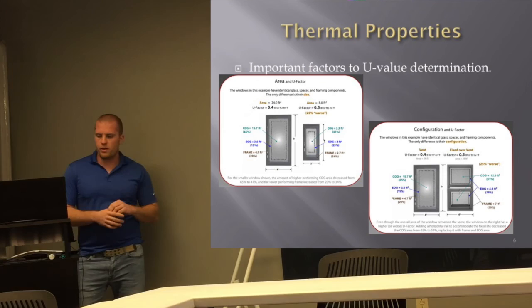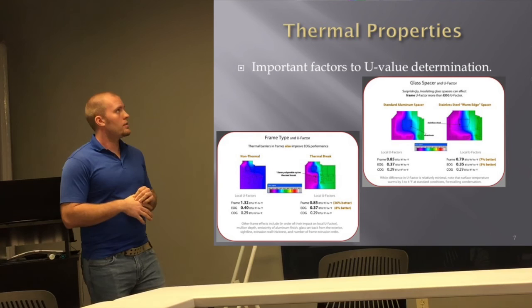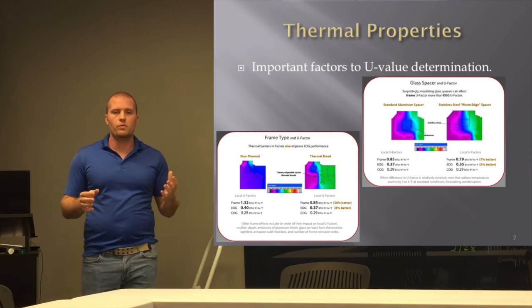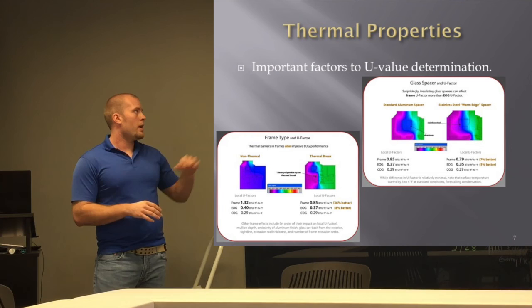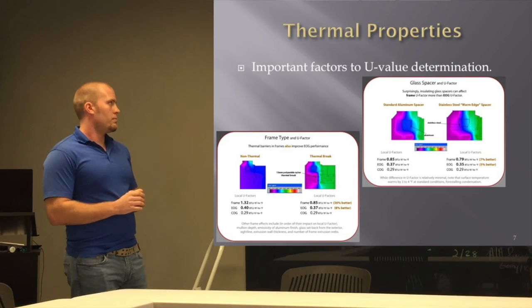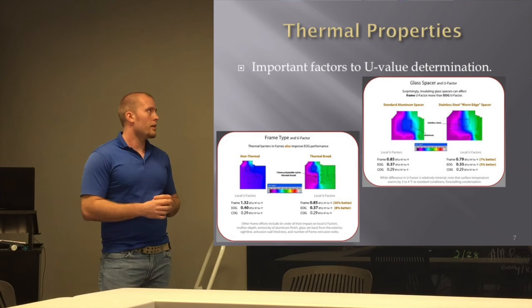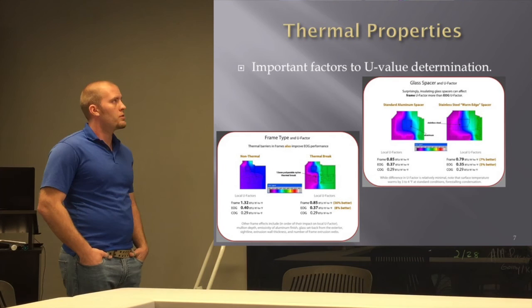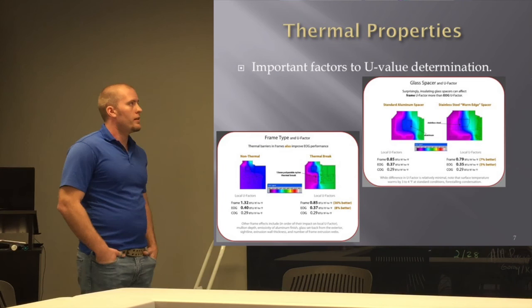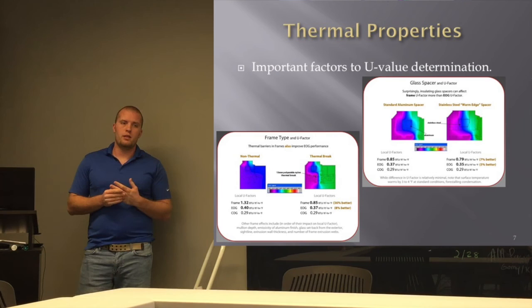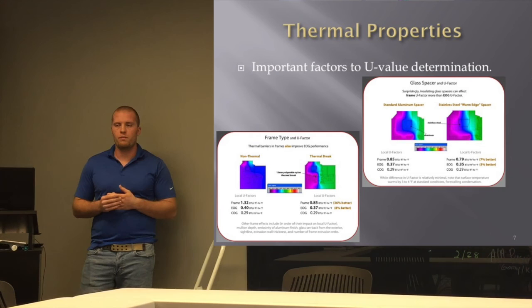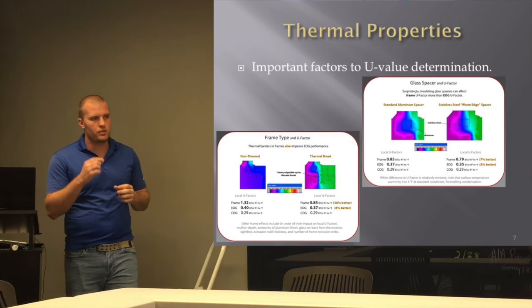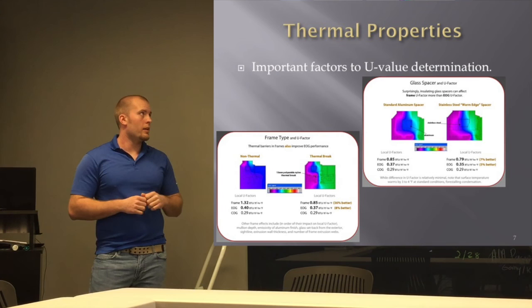Looking at frame and edge-of-glass performance: a non-thermal system has a frame U-factor of 1.32, which is quite high. A system with a thermal break — like a storefront system — is 36% better, dropping to 0.85. A warm-edge spacer using stainless steel instead of aluminum gives about a 7% improvement in U-factor. There's also a foam spacer product emerging, though architects don't love it because it creates a big black line around the window.